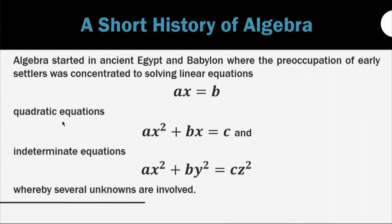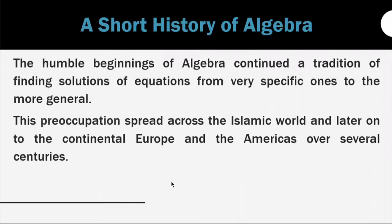Ax equals b — the linear equation. Then we also have the quadratic equation: ax squared plus bx plus c equals zero. And intermediate equations: ax squared plus by squared equals cz squared, whereby several unknowns are involved. The humble beginnings of algebra continue a tradition of finding solutions of equations from very specific ones to the more general, spreading across the Islamic world and later continental Europe and the Americas over several centuries.